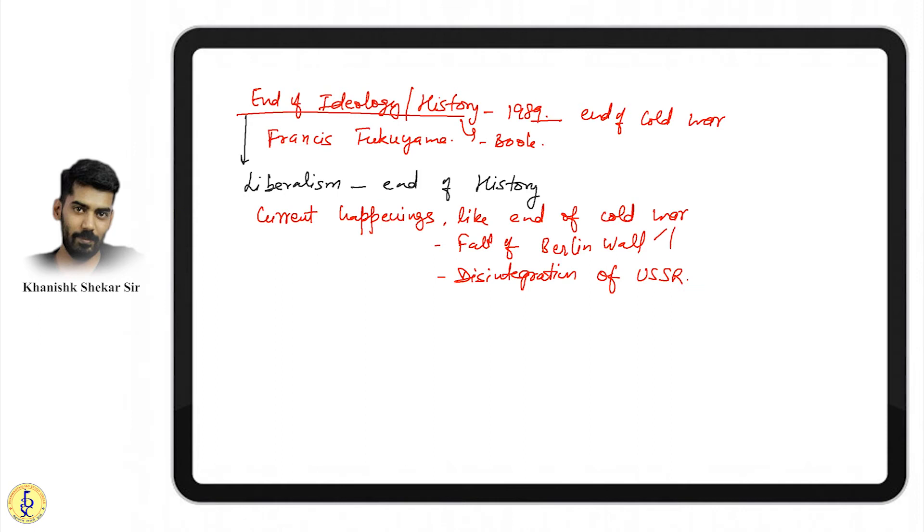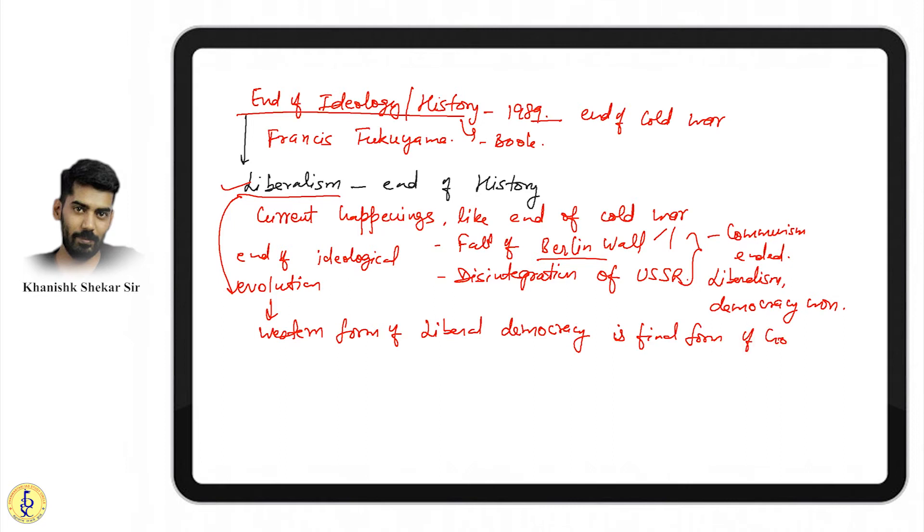You'll read in history how Germany got united after the fall of Berlin Wall in 1986 or 87. He said that liberalism has won, and this victory is final. It is the end of ideological evolution, meaning because of these two incidents communism is over and liberalism and democracy are victorious.